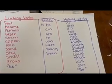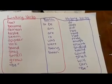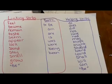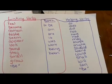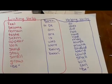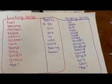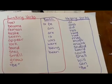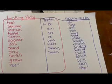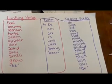Helping verbs. A helping verb helps the main word assert action, being, or existence. Do, does, did, has, have, had. May, must, might, should, would, could. Shall, will, can, be. These are the helping verbs.